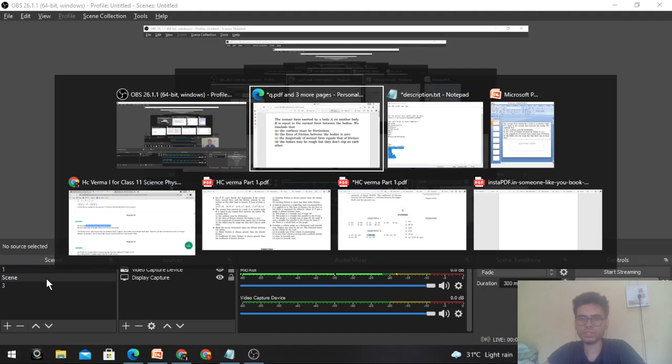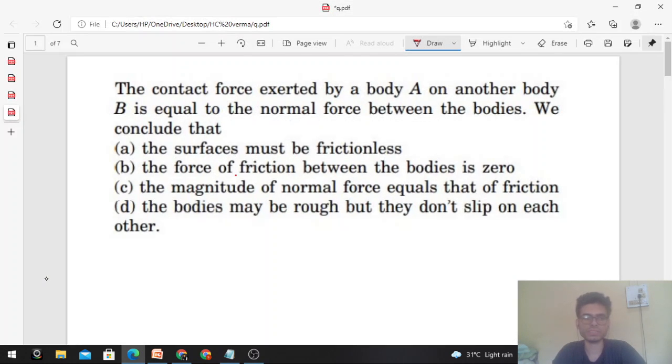Okay, hi everyone. Today let's discuss this interesting problem from H.C. Verma. The problem says the contact force exerted by a body A on another body B is equal to the normal force between the bodies, and we conclude that normal force equals the contact force. What is contact force? Contact force is the resultant of normal force and friction force. So if contact force is equal to the normal force, what does that mean? That friction force is zero. So friction force is not present between the two bodies.